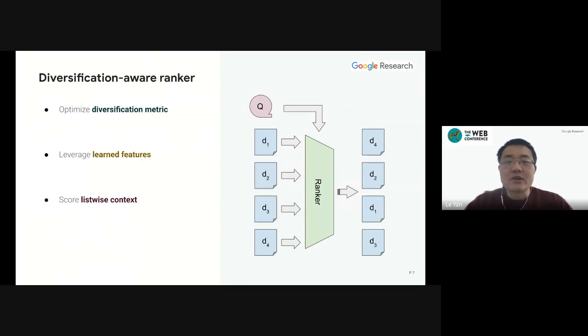First, we train the ranker with a diversification-aware loss that directly optimizes the diversification metrics, for example, alpha NDCG metric or intention-aware ERR metric. Second, we feature the query and candidate documents with distributed representations instead of manipulated features. And finally, we use a list-wise score that captures the ranking context as in the sequential models.